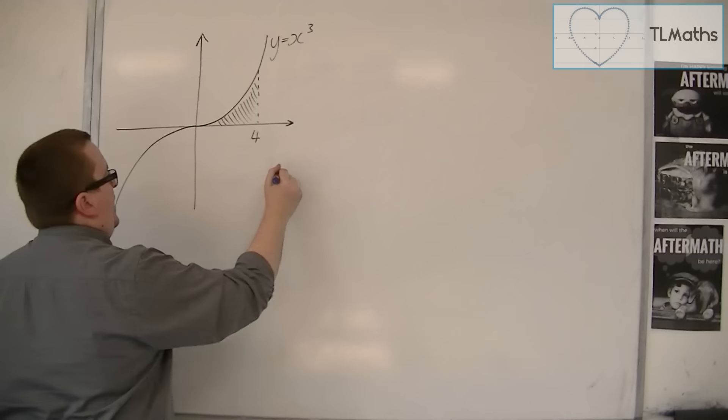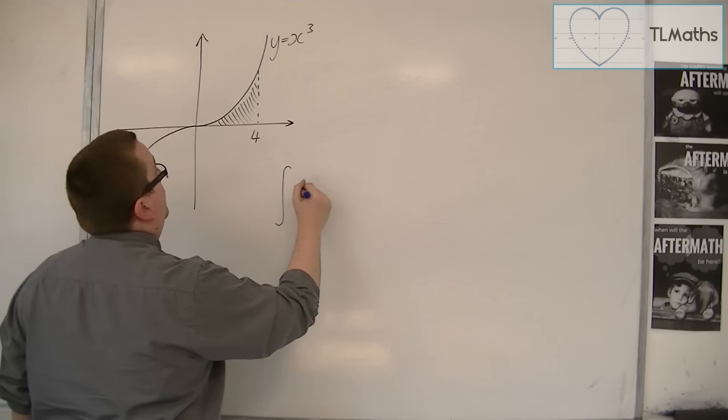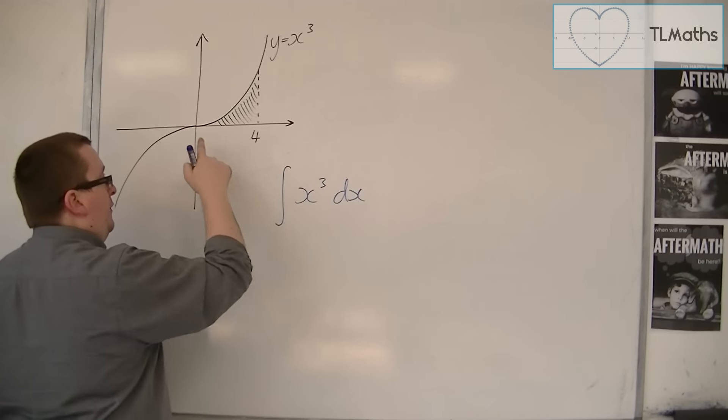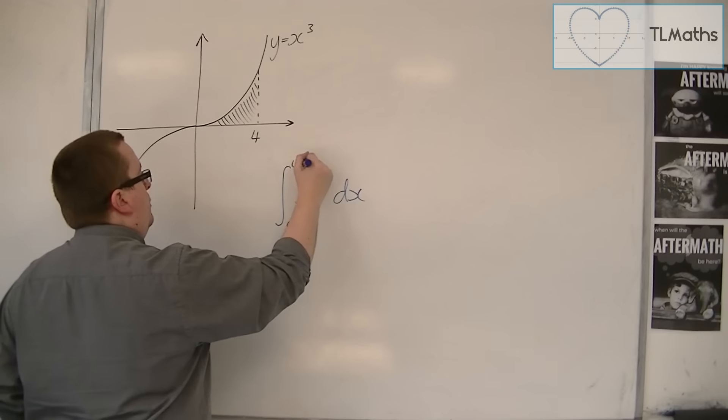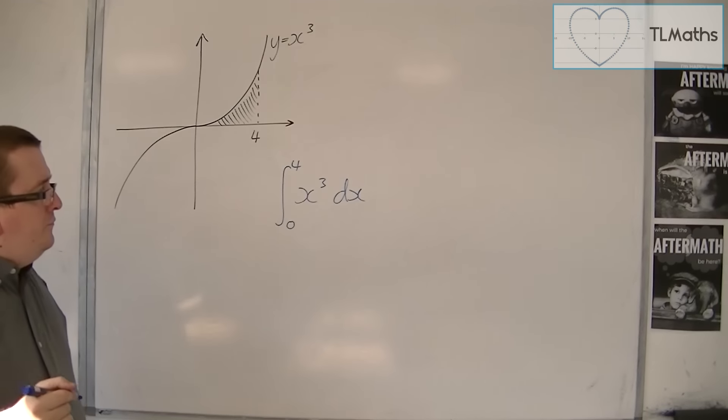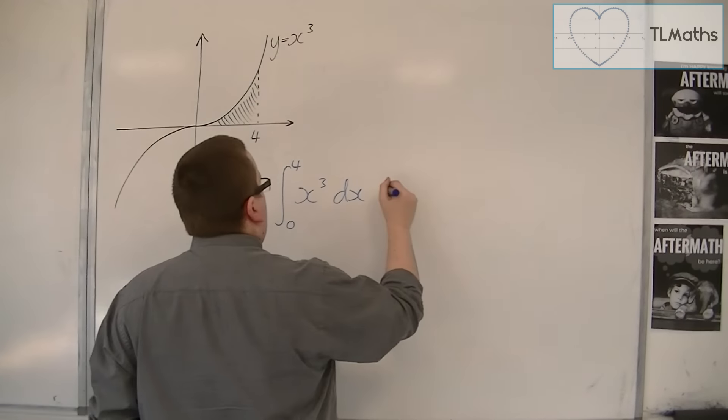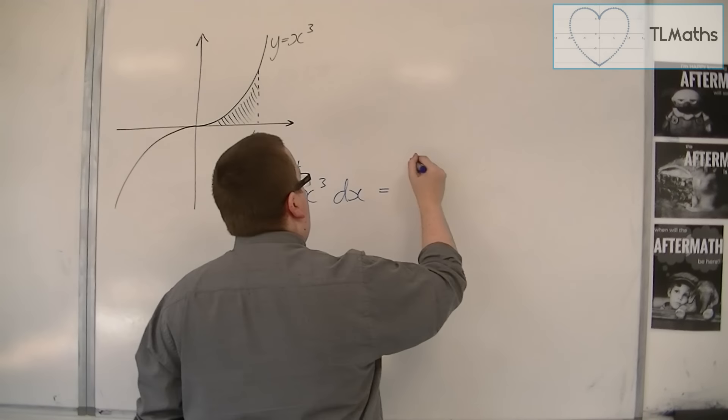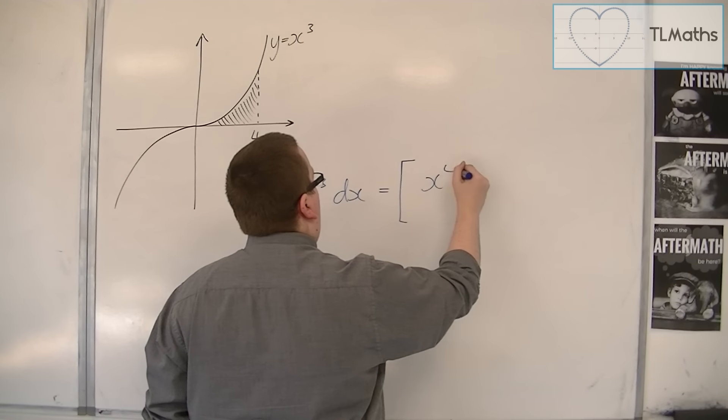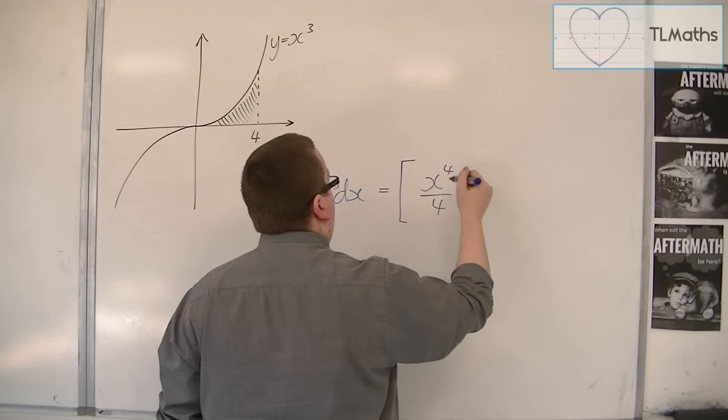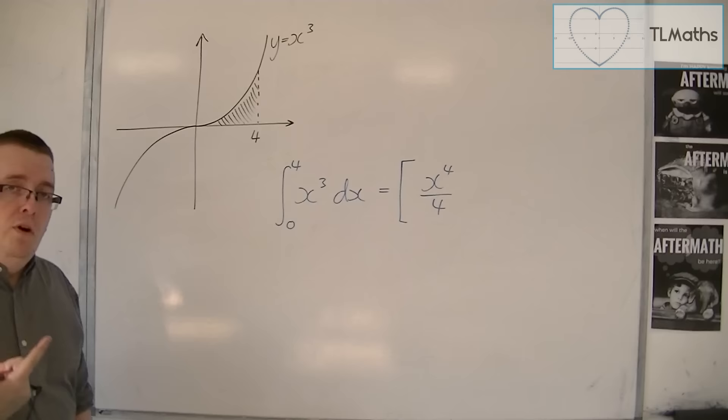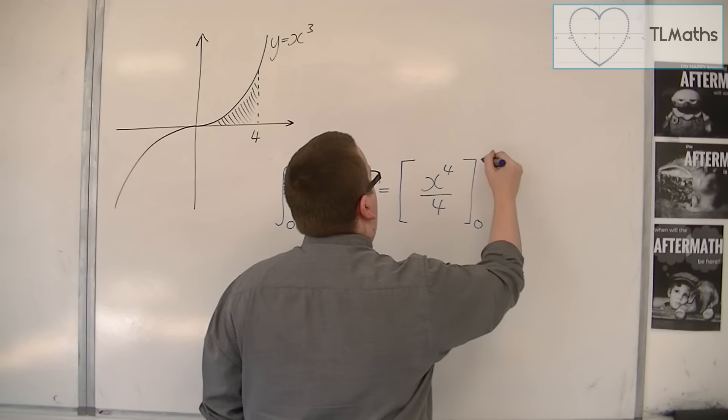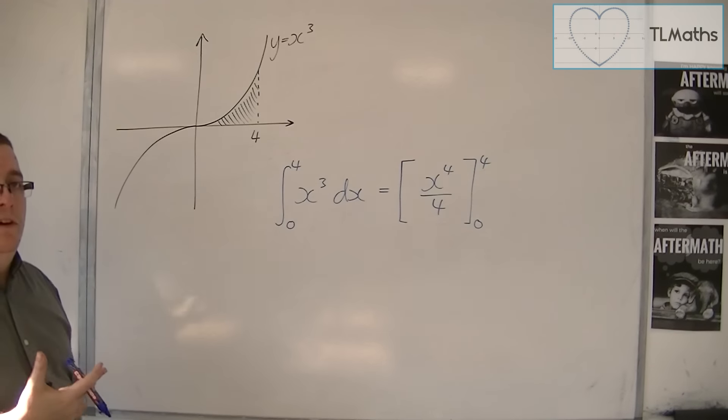So we want to integrate x cubed dx with the limits of 0 and 4. So we write it like that. In this, we add 1 to the power and divide by the new power, putting it in square brackets. We don't bother writing in the plus c because we know that they'll just cancel. And we put the 0 and 4 on the right-hand side.